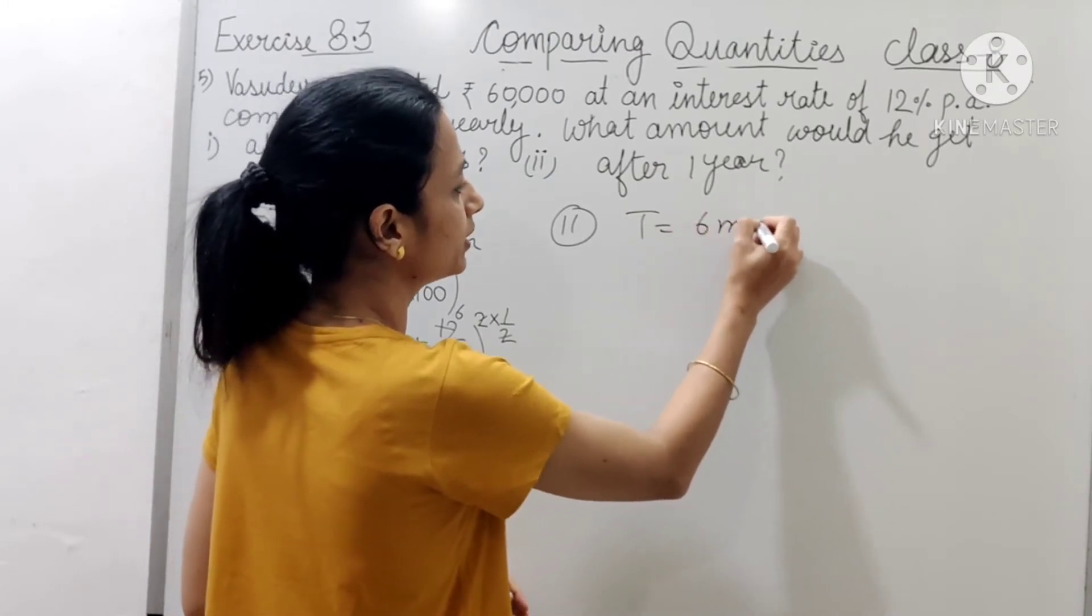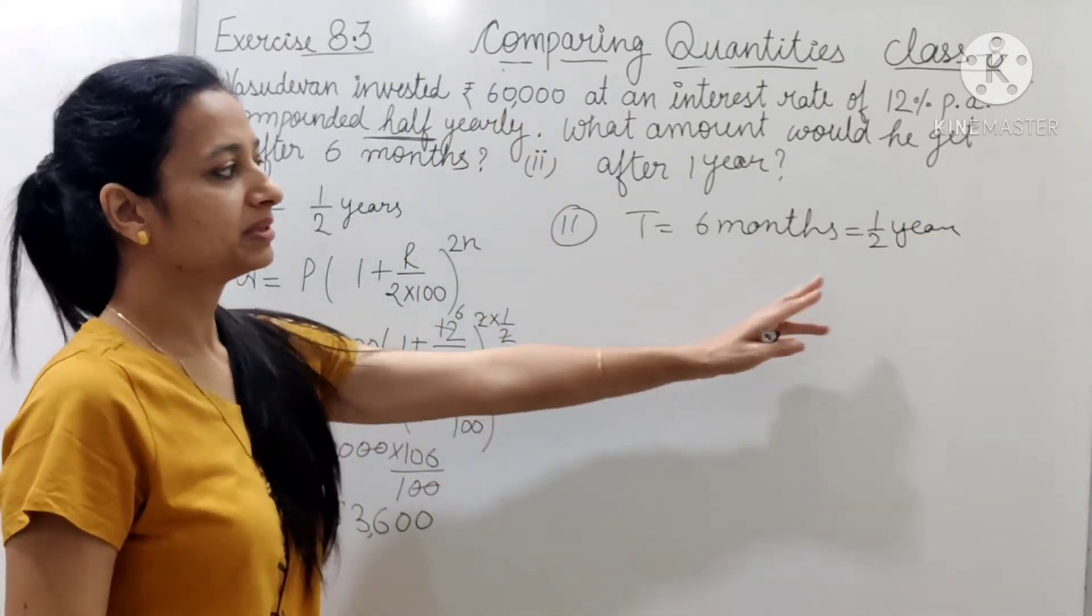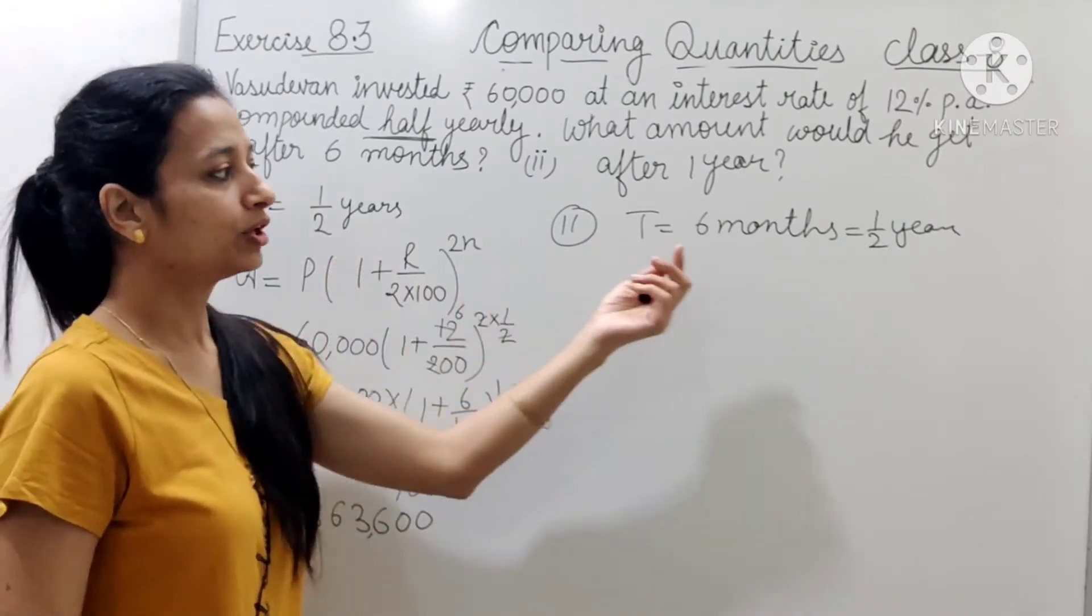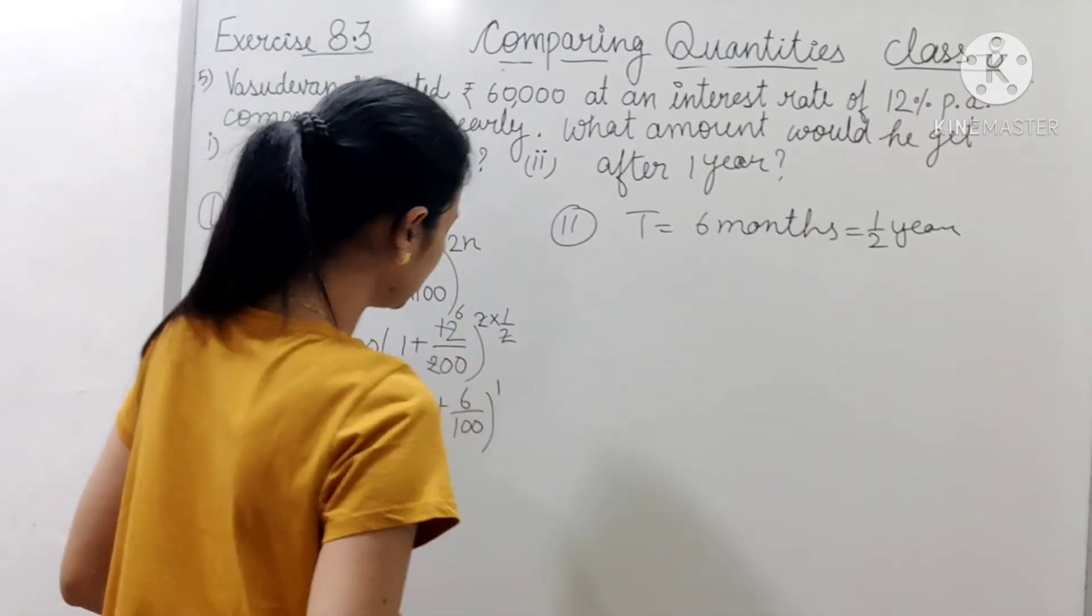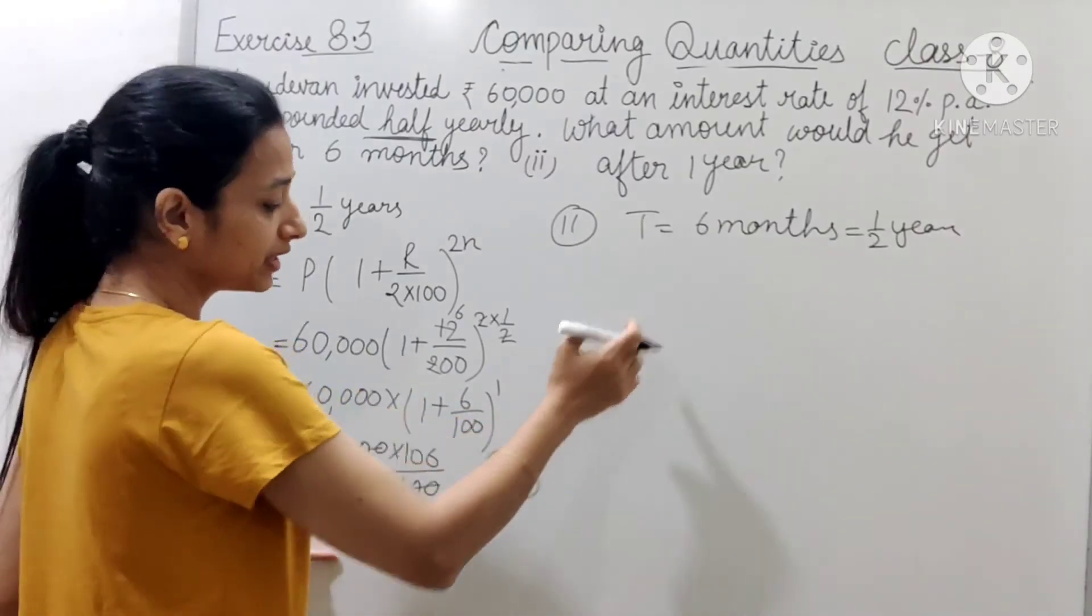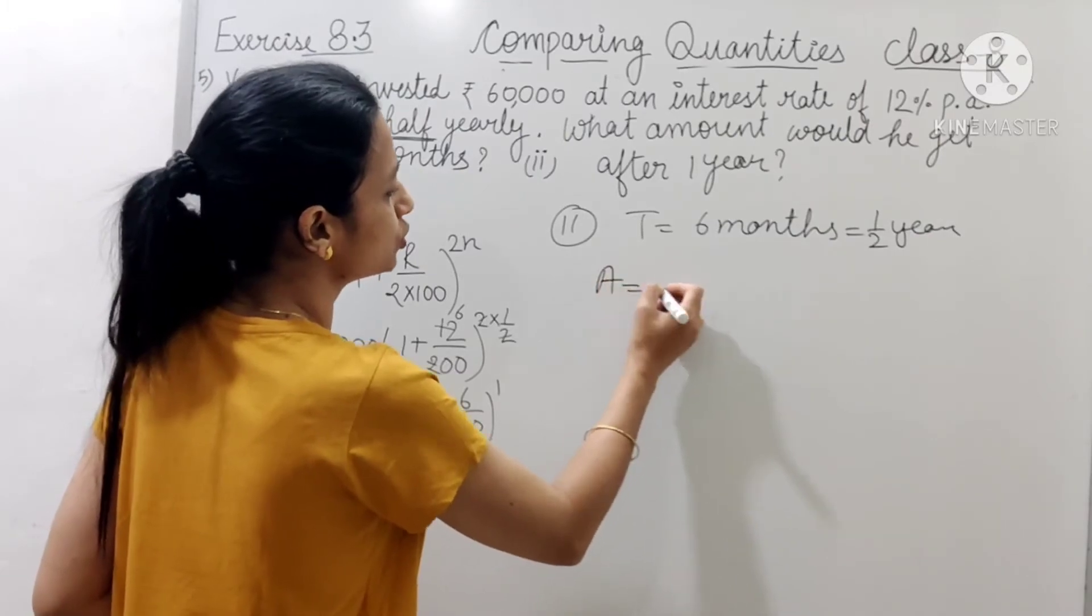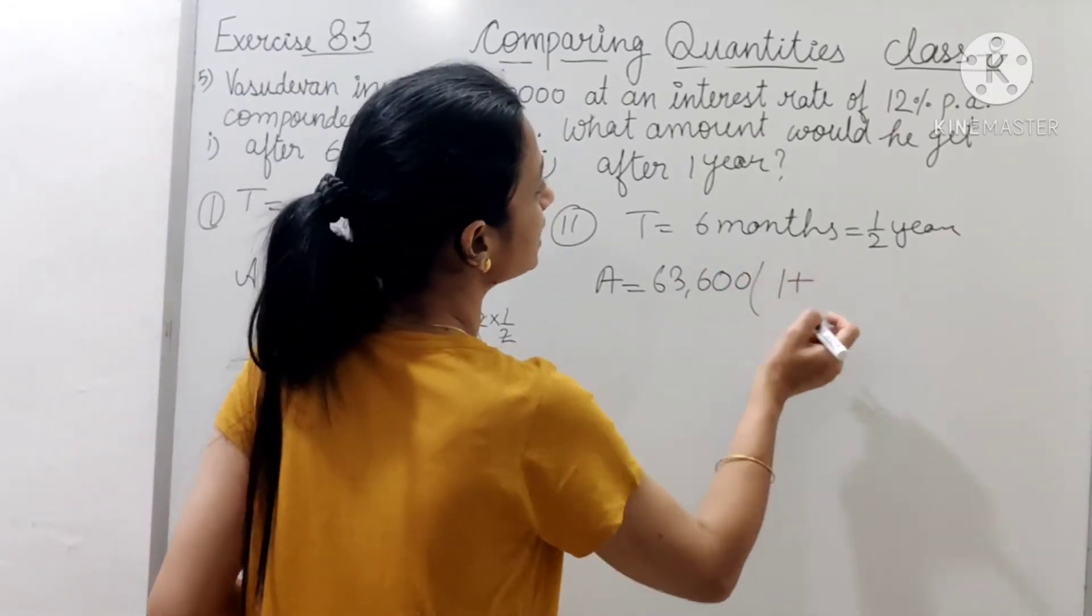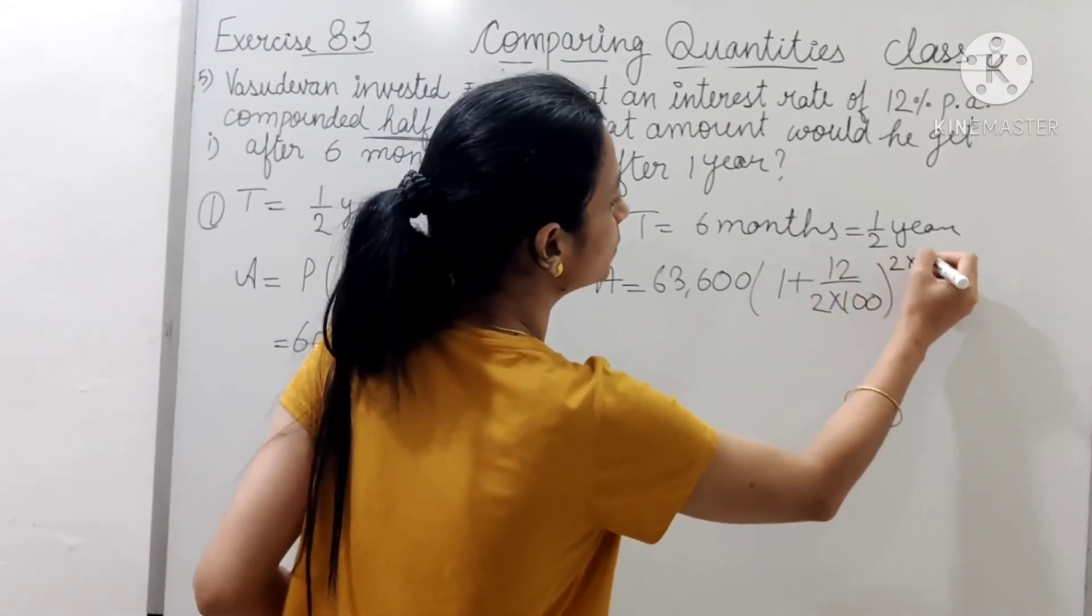Tho yahaan par bhi time kya ho jayega hamaara? Remaining six month honge. Yeh wala jo amount hai, yeh next half year ke liye kya ho jayega? Principal. A equals to P humara 63,600 and 1 plus rate of interest again half ho jayega, or time 2 into half. Tho 2 se 2 phir cancel ho jayega.